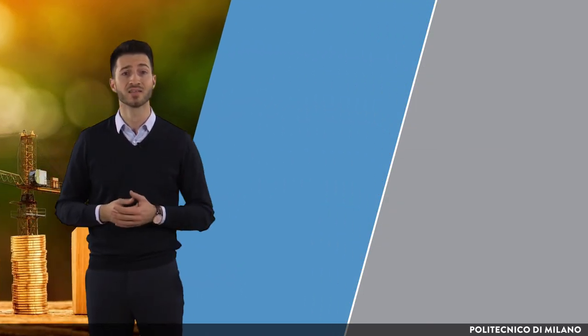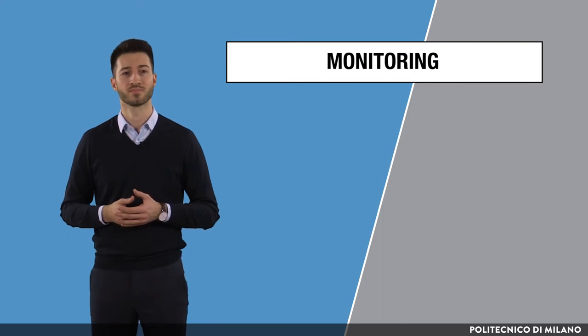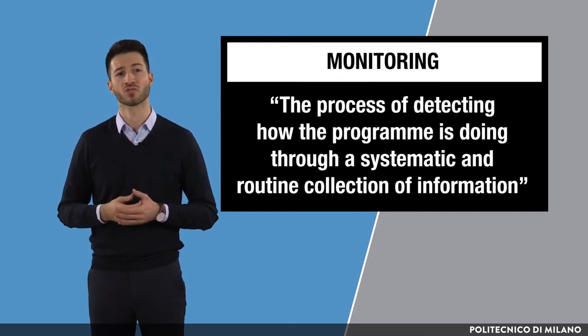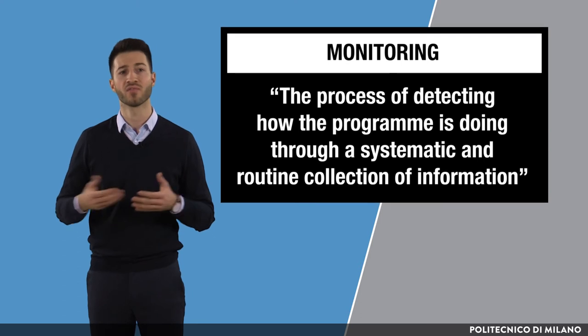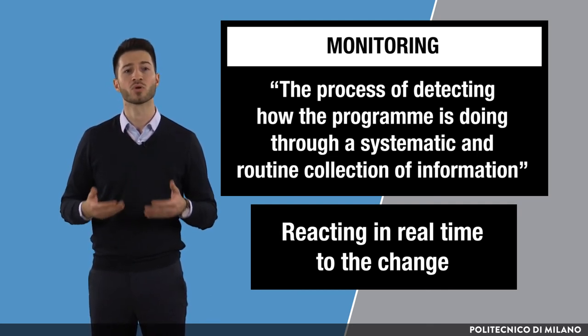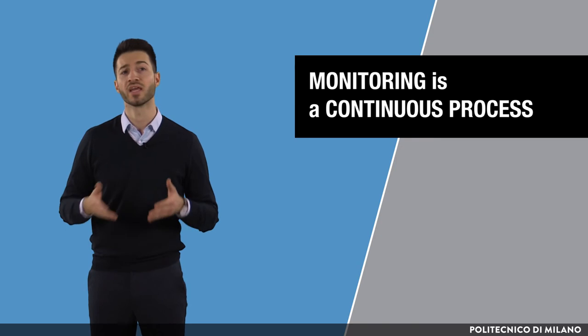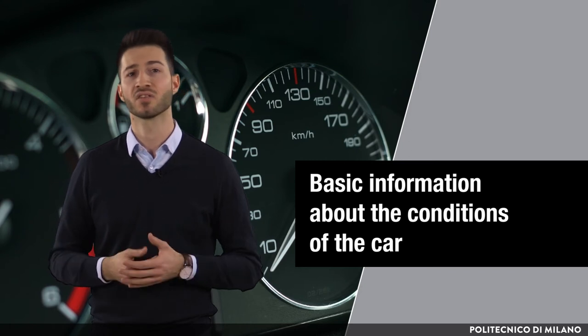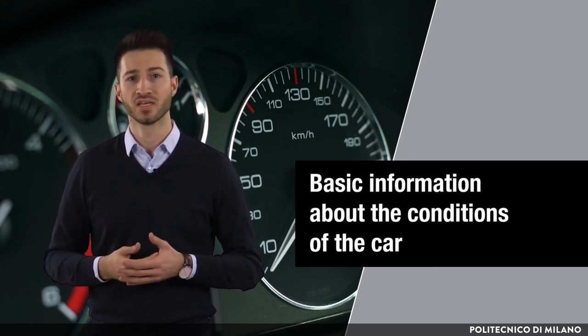Monitoring and evaluation concepts are strictly tied and complement each other, but also have important differences. Monitoring refers to the process of detecting how the program is doing through a systematic and routine collection of information. It is performed while a policy program is being implemented, with the aim of improving the project design and functioning while in action. It enables reacting in real time to changes that could not have been foreseen. Monitoring is a continuous process typically carried out internally by the agents implementing the policy. For example, monitoring is like a dashboard of a car — it tells the driver basic information about the conditions of the car: how much gas is left in the tank, the temperature of the oil, how many kilometers it has traveled, and so on.